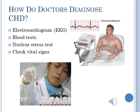Doctors have four ways to diagnose a patient with CHD. They check the normal vital signs like blood pressure and heart rate, draw blood to send to the lab for any irregularities, and perform a nuclear stress test. The main test is an electrocardiogram that measures the electric activity of the heart.